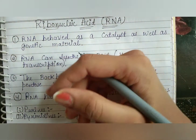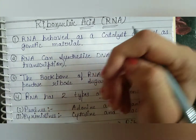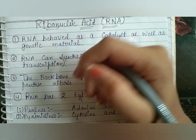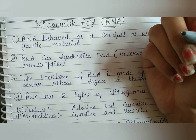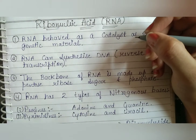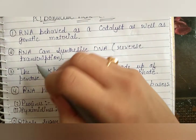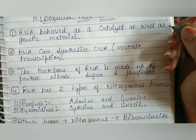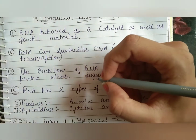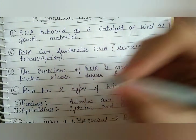RNA is found in some viruses only as their genetic material. So first, we are just having an overview of RNA in this video. RNA behaves as a catalyst as well as a genetic material. It is a genetic material, but along with being a genetic material, it also behaves as a catalyst.